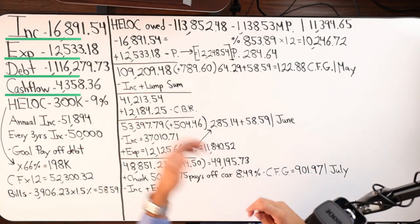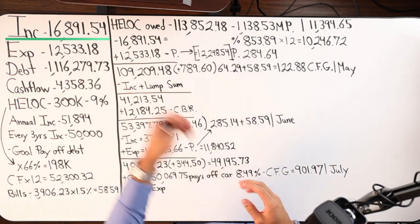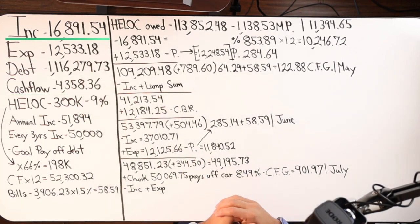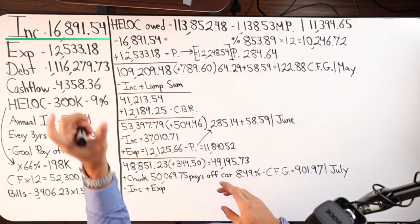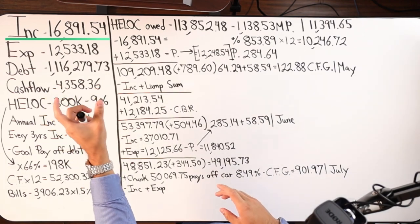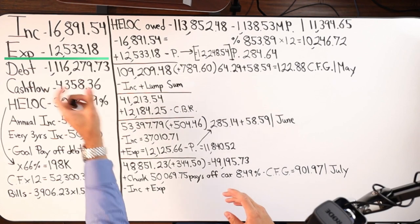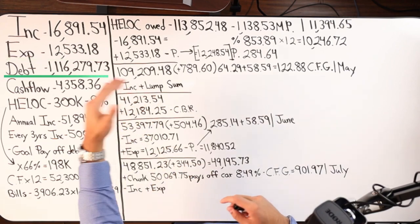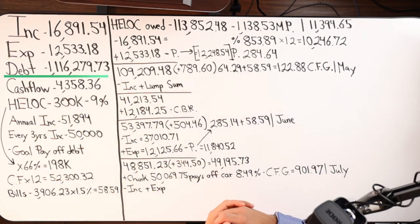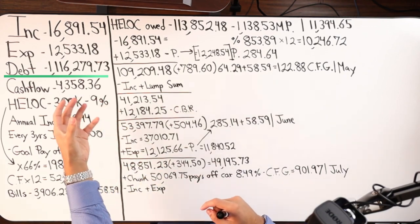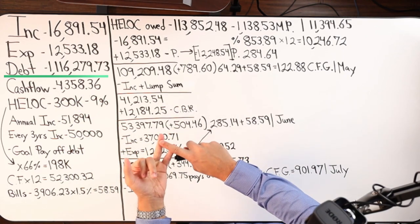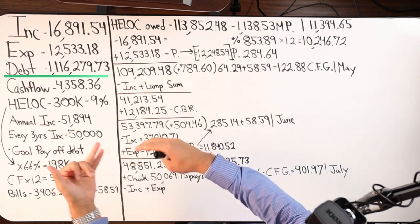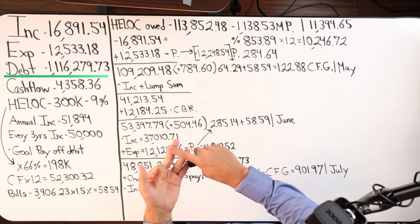Starting with the four major numbers, we have income $16,891.54. That is consistent monthly income coming in for this particular individual here. Their expenses are $12,533.18. Total debt, $1,116,279.73. That is made up of a mortgage, home equity debt. So there's already existing debt on our debt tool and a vehicle.